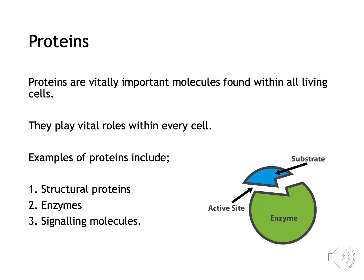We have discussed the production of proteins since Nat 5 Biology. In Advanced Higher we want to know how the polypeptide chain we created at the end of translation becomes a protein that plays a vital role within every living cell. Many of the proteins that we know are essential for life, and we are going to look at how proteins such as enzymes and signalling molecules are produced.